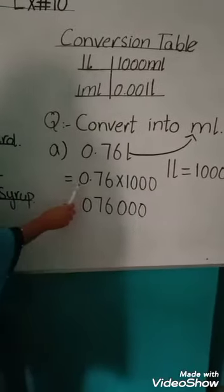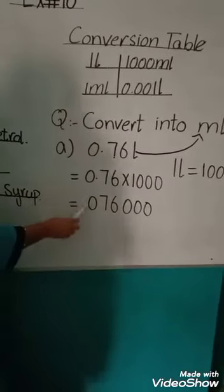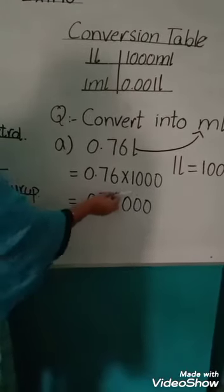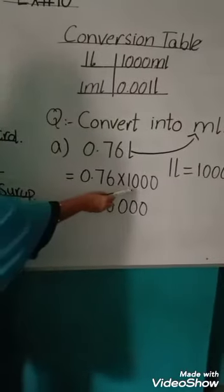First of all, we write the question: 0.76, and 3 zeros. Why do we write the 3 zeros? Because thousands have 3 zeros.